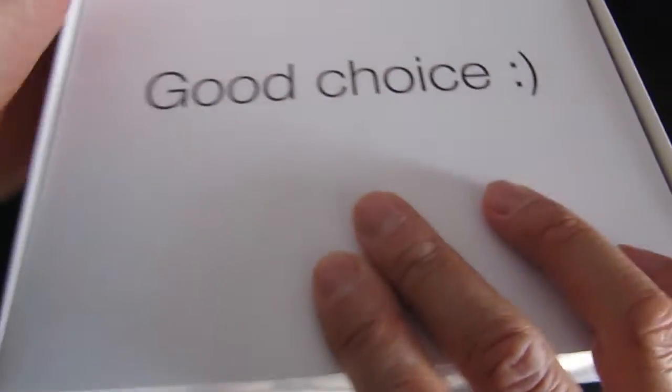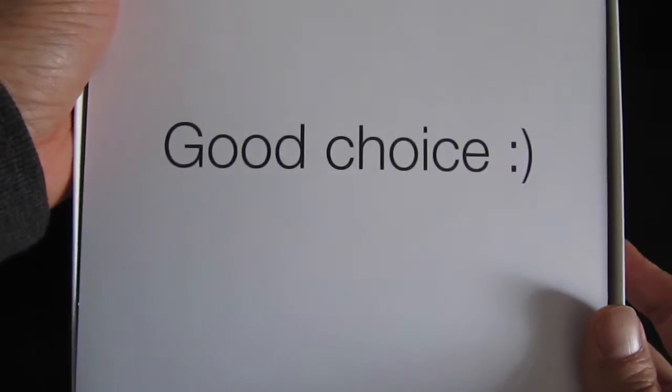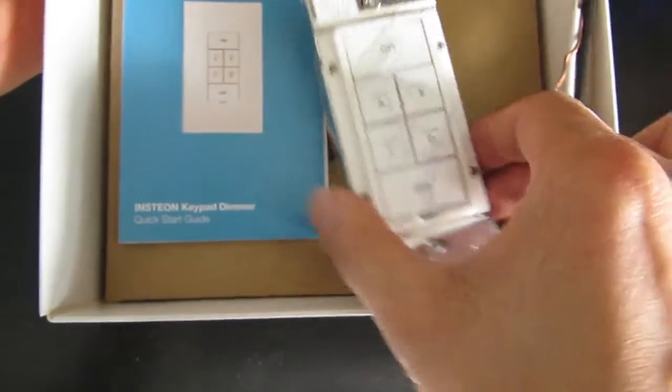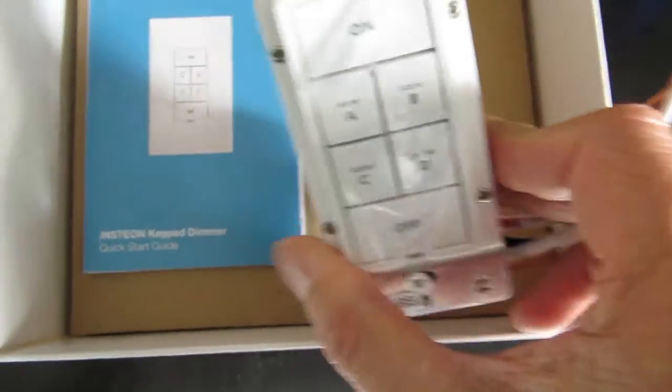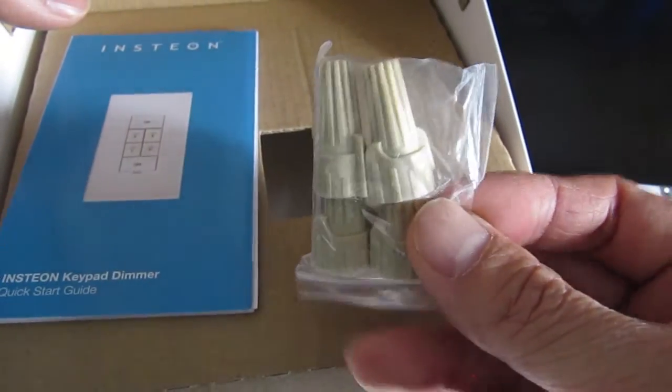When I open the box I get this greeting that says I made a good choice on my purchase. Inside the box there's the switch itself and the instruction manual. It also comes with a package of wire nuts.